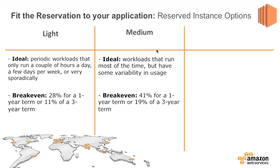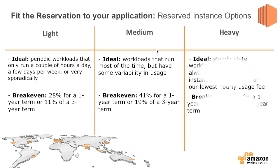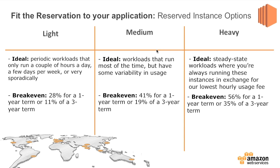Light and medium are similar in that you pay the upfront fee but only pay the hourly rate when the servers are actually on. So theoretically, with a light or medium RI, if you never turn on a server you never pay another cent beyond the initial purchase. The heavy RI is different — it's for steady-state workloads where you're always running and you're willing to commit in exchange for the lowest possible hourly usage fee. The break-even point is higher: 56% for a one-year and 35% for a three-year term. But these are where you can save up to 70% over three years or 40% over one year.